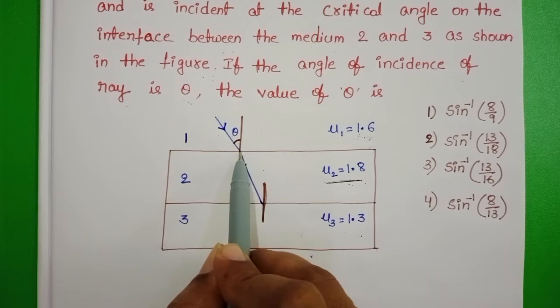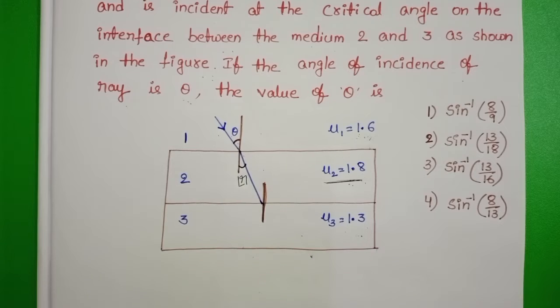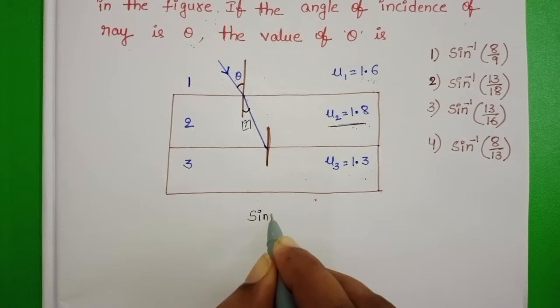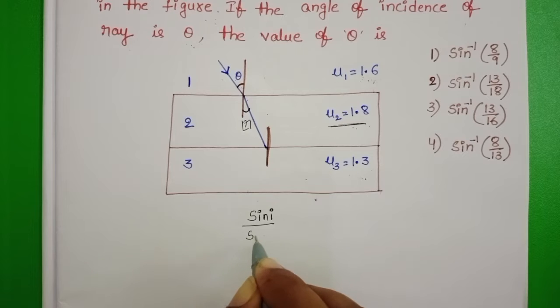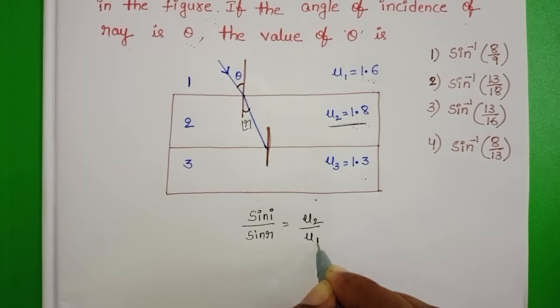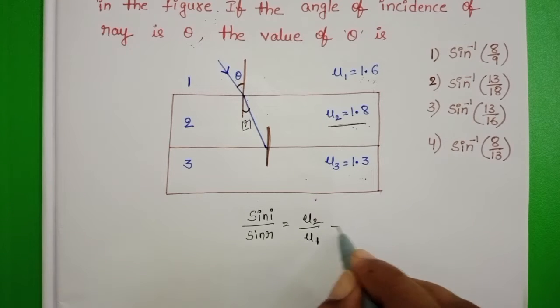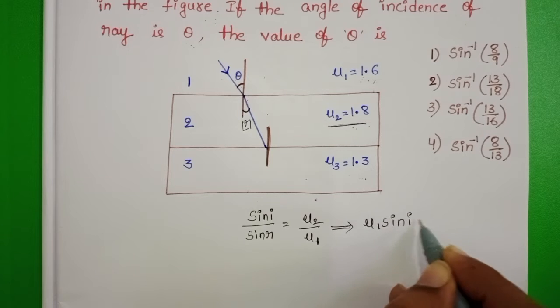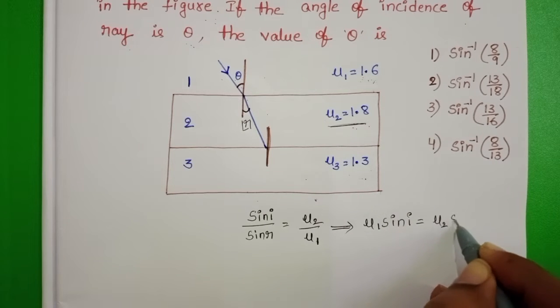At this interface, apply the Snell's law. Sine of angle of incidence to the sine of angle of refraction equals the refractive index of the second medium to the refractive index of the first medium. From this, mu 1 sin i equals mu 2 sin r.